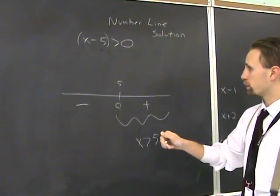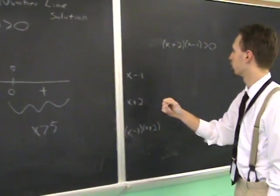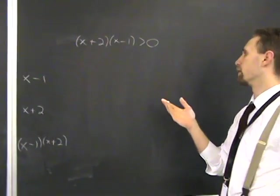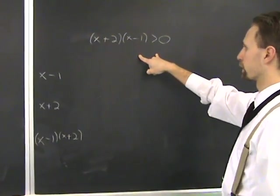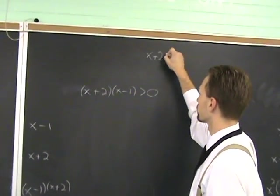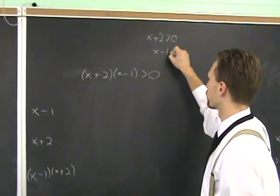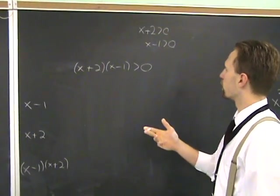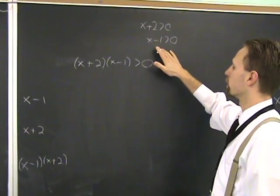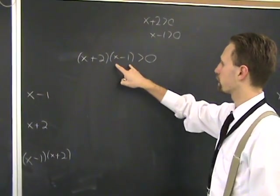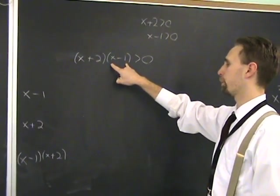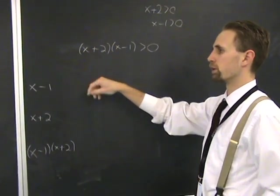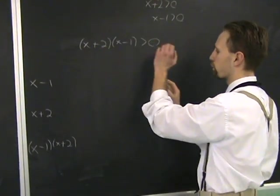But you cannot just do algebra on something more complicated like (x+2)(x-1)>0. What do you do here? A common answer that I would get for something like this would be if the students say x plus 2 is greater than 0, and x minus 1 is greater than 0. What does that mean? This is incorrect, because numbers, values of x that make this positive will not necessarily also make that positive.